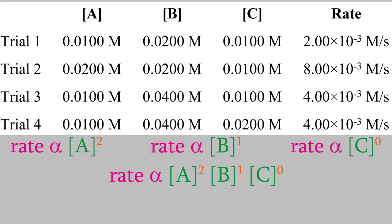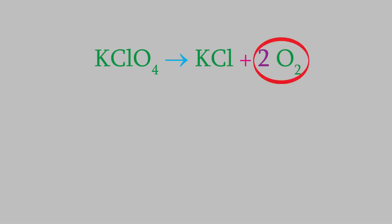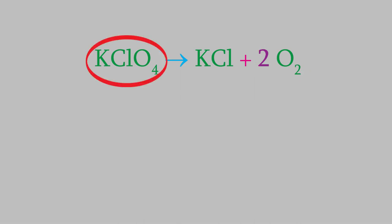For example, here's a reaction in which potassium perchlorate reacts to form potassium chloride and oxygen. As you can see, there are three different product molecules - one potassium chloride and two oxygen molecules. However, there's only one reactant molecule, and that makes this a unimolecular reaction.